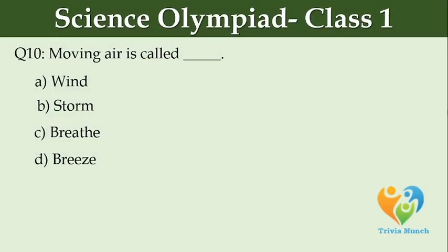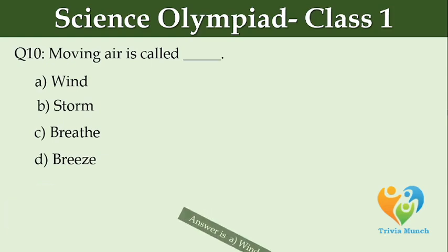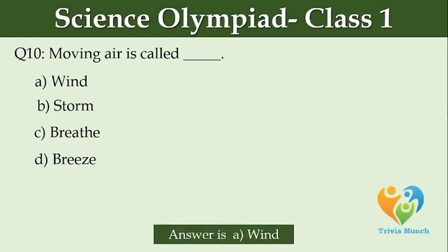Moving air is called dash. Option A: Wind. Option B: Storm. Option C: Breathe. Option D: Breeze.